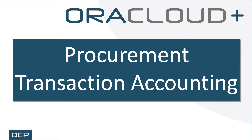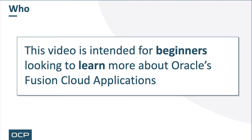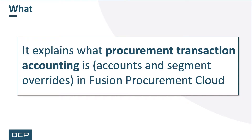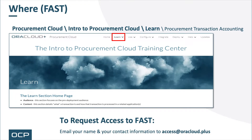Hello and welcome to the Procurement Transaction Accounting video presentation. This video is intended for beginners looking to learn more about Oracle's Fusion Cloud applications. It explains what Procurement Transaction Accounting is — accounts, segments, and overrides in Fusion Procurement Cloud. This video, like all of our video snippets, can be found within FAST, OCP's Fusion Application Support Tool.